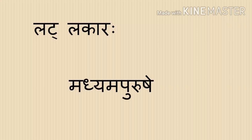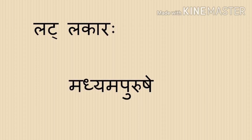We are talking about what should be used in Madhyama Purusha. Tuvam, Yuvam, and Yuyam appear as subjects. Tuvam means 'you', Yuvam means 'you both', and Yuyam means 'you all'. Tuvam is used in Ekvachanam, Yuvam in Dvivachanam, and Yuyam in Bahuvachanam. In Madhyama Purusha, only these three appear as subjects, so it is easy to understand.